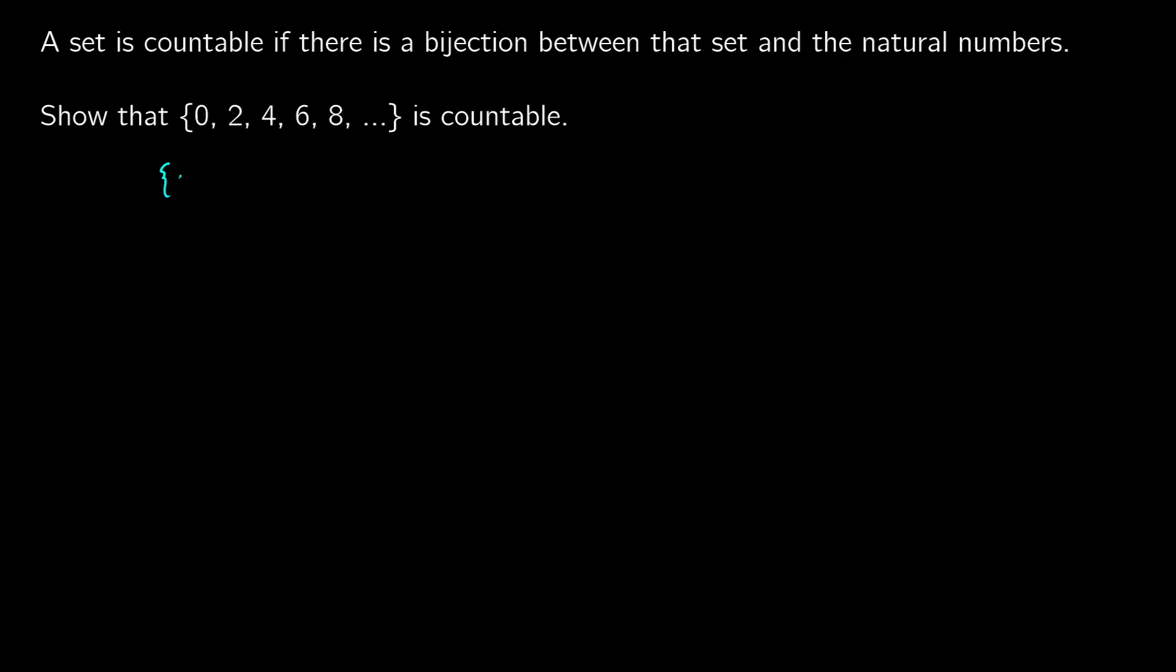What we have to show is that for this set {0, 2, 4, 6, 8, ...} we can map it onto the set of natural numbers, which is {0, 1, 2, 3, ...}. This comes from the fact that the natural numbers are countable, so if we can create some function that takes all of the elements in our first set to the set of natural numbers, then our first set should be countable too.